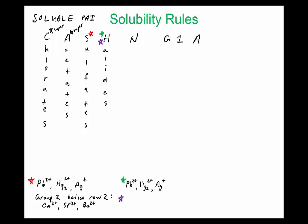I'll put another star here because this does not include fluoride, so F⁻ anions are insoluble. The N stands for nitrates.